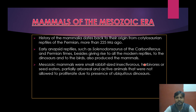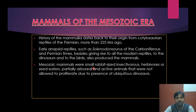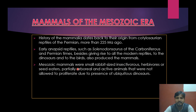Early mammals originated and appeared as small rabbit-shaped insectivores — small insect-eating animals during the reptilian era.